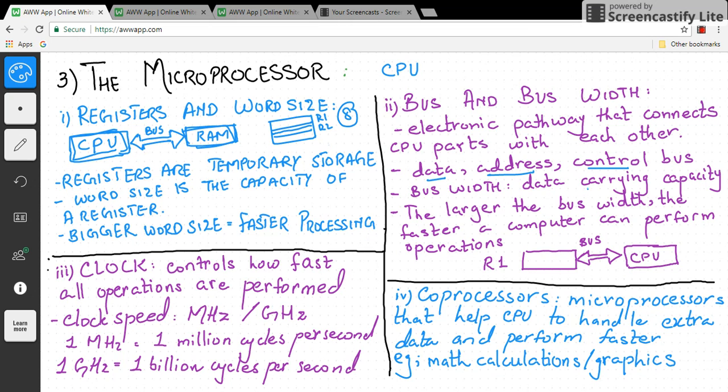Bus width is the data carrying capacity. The more bus width, the faster the computer will perform. If our bus width is 16 bit and the register has 8 bit data, then in one time, we can transfer 2 registers worth of data. With larger bus width, our data transfer is faster and work is completed more quickly.